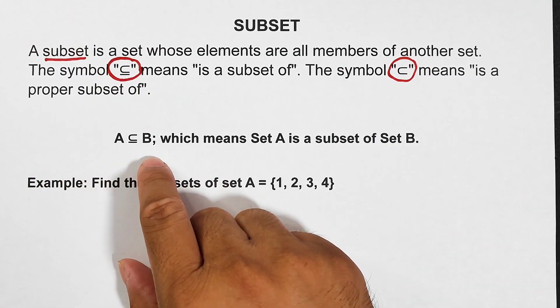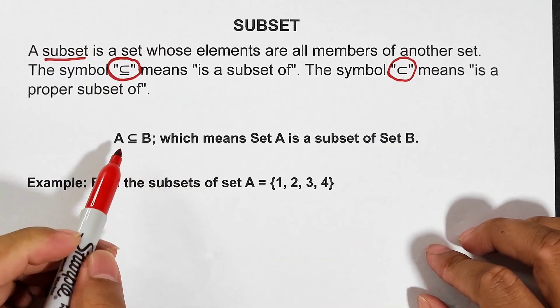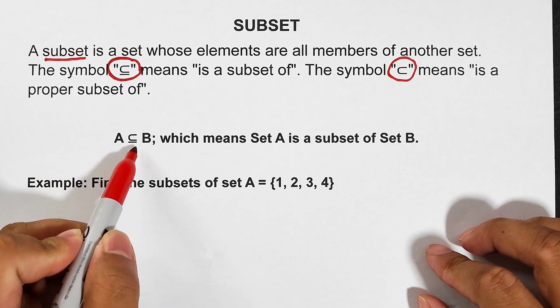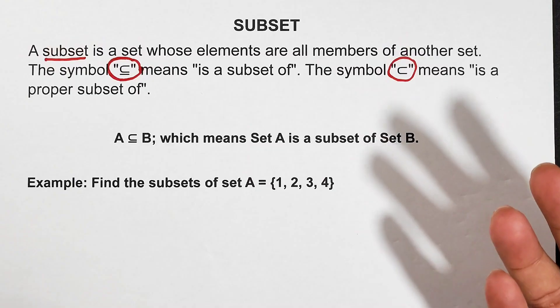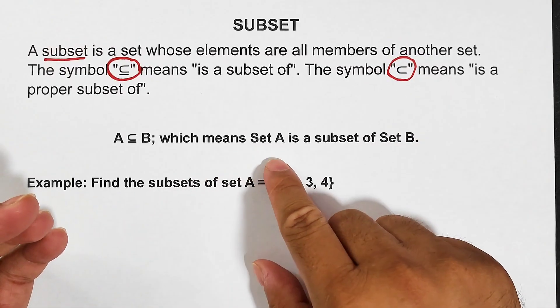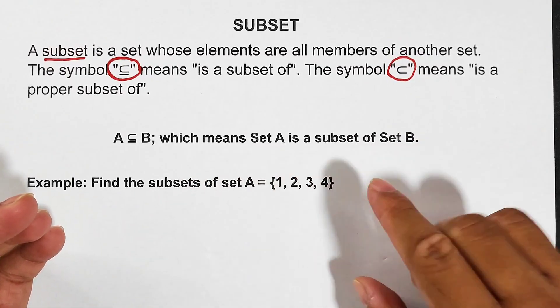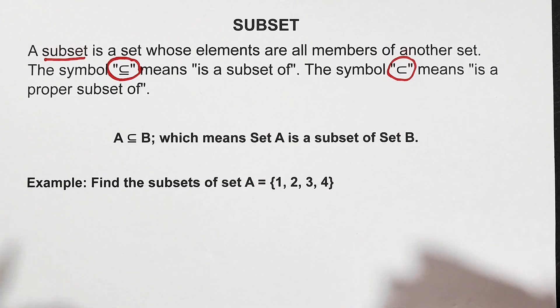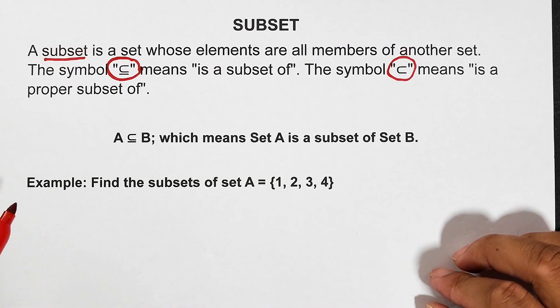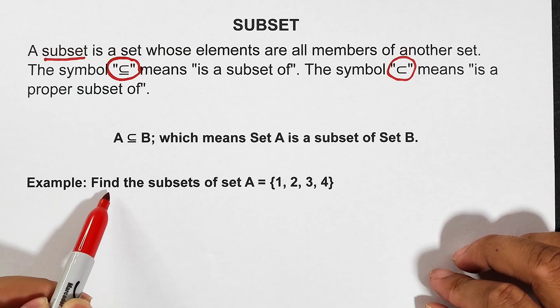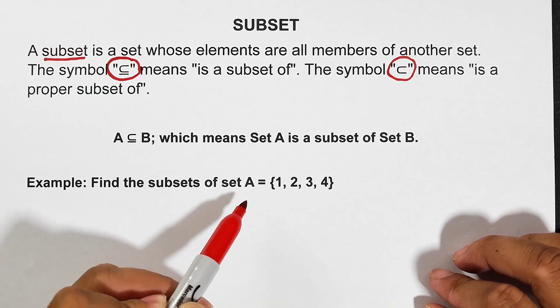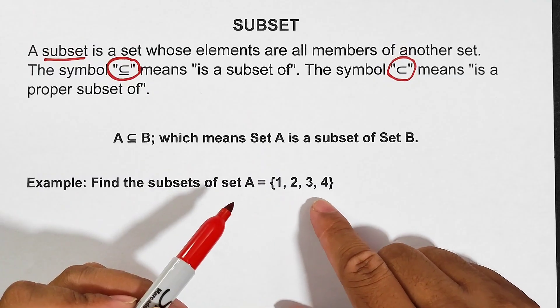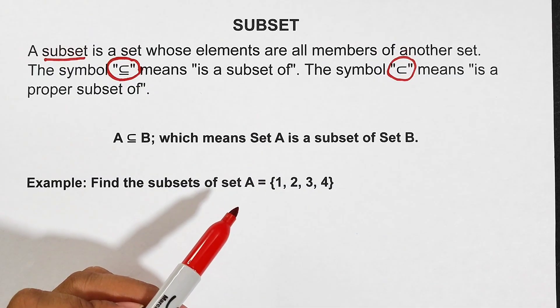So what we have here is set A and set B. If we read this into symbols, set A is a subset of set B, which means set A is a subset of set B. Now for you to understand well what is a subset, we have here the problem. Example: find the subsets of set A in which the elements are one, two, three, and four.